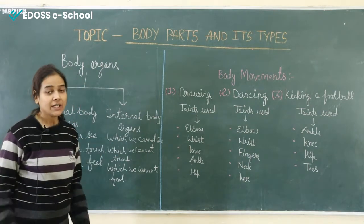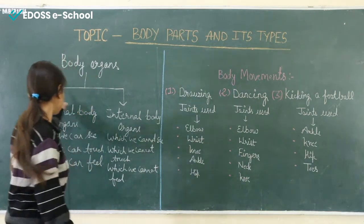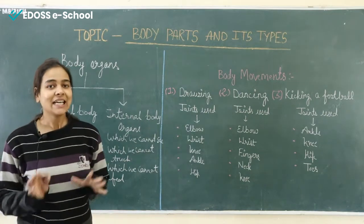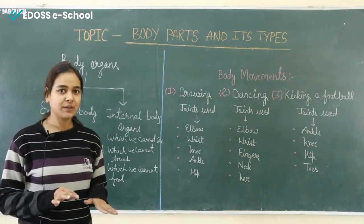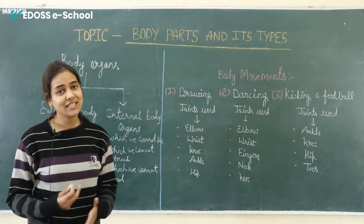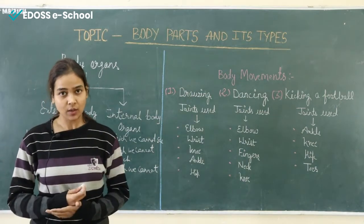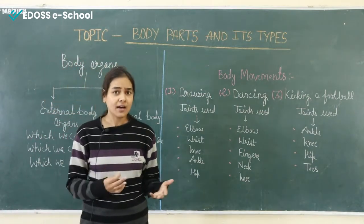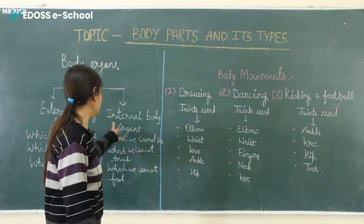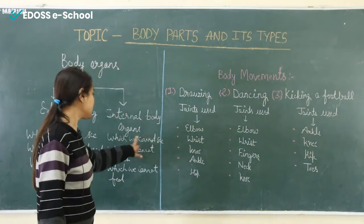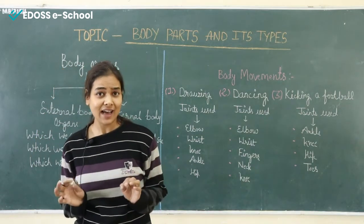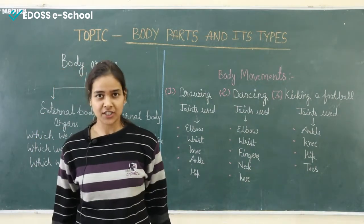So these are the basic differences between external body organs and internal body organs. Now in this chapter we will focus on the internal body organs. Parts that are inside our body are called internal body organs. An organ is something that has a specific function.